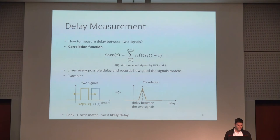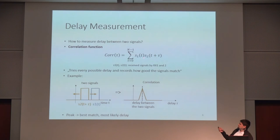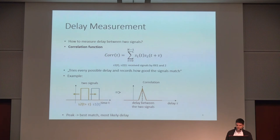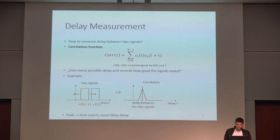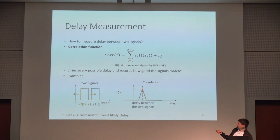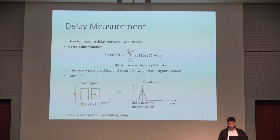Let's talk about how the delay between signals is actually measured. I used the correlation function, which is a simple formula: the two signals received by receiver one and receiver two are multiplied and integrated to get a measure of similarity. This is calculated for every possible delay. There's a small example with two rectangular signals — you multiply them, add up all samples, and shift one signal — ending up with a correlation function. When there is a peak in the correlation function, you can read out the delay between the two signals because at that delay the two signals match best.